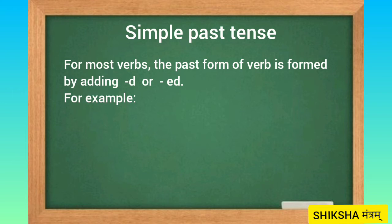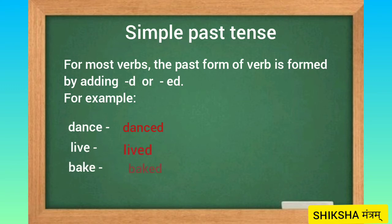For most verbs the past form is formed by adding D or ED. For example: dance — danced, lift — lifted, bake — baked, clean — cleaned, paint — painted, play — played.